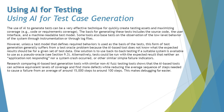Research comparing AI-based test generation tools with similar non-AI testing tools shows that AI-based tools can achieve equivalent levels of coverage and find more defects, while reducing the average sequence of steps needed to cause a failure from around 15,000 steps to almost 100 steps. This makes debugging far easier. The tool not only helps prepare test cases but also suggests the minimum number required, so the team doesn't have to spend excessive time during execution.